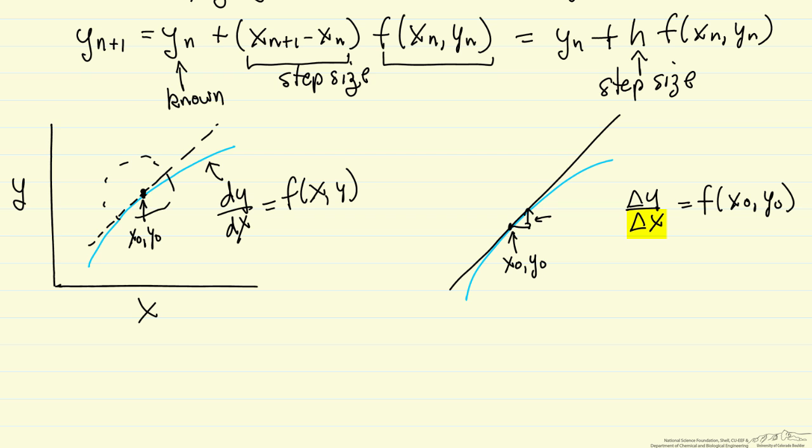This delta x value is what we're going to call h, our step size. And so we're approximating. We're saying this point on this tangent line is quite close to the actual value on the blue curve.